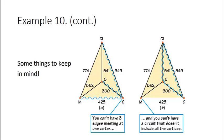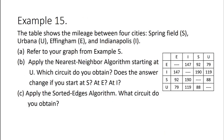To conclude this video, here are two examples for you to try on your own. The first is the graph between four cities: Springfield, Urbana, Effingham, and Indianapolis — the complete graph we made in the previous video. Pause the video and apply the nearest neighbor algorithm starting at U, then repeat starting at S, E, or I. Then apply the sorted edges algorithm and see what circuit you obtain in each case.